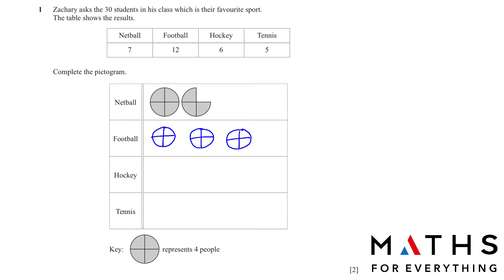We want 6 for hockey. So we have one full circle, which is 4, and a half circle. You can make the circle like this half or you can make it like this half. Doesn't make a difference. The next one we have is 5 people for tennis. So we will have one circle and only one fourth. 4 plus 1 equals 5.